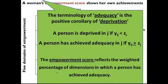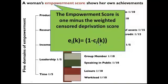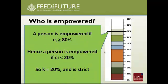The empowerment score is the weighted sum of dimensions in which a person has adequacy, and it equals 1 minus the censored deprivation score. In the do file, we construct the censored deprivation score, and the empowerment score is conceptually 1 minus that. We call the poverty cutoff K. If K is 20% and is a strict poverty cutoff, then the person is empowered if their deprivations are less than 20%, and disempowered if their deprivations are greater than or equal to 20%.